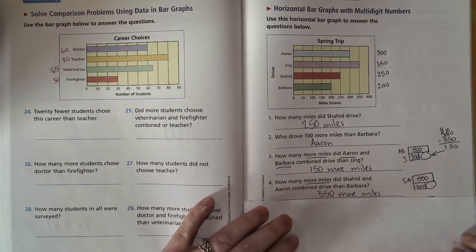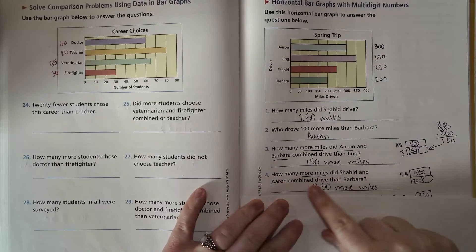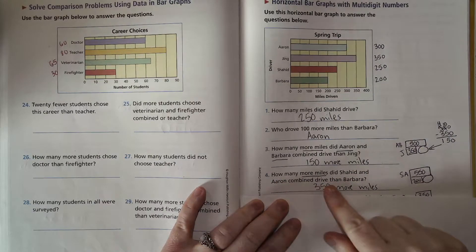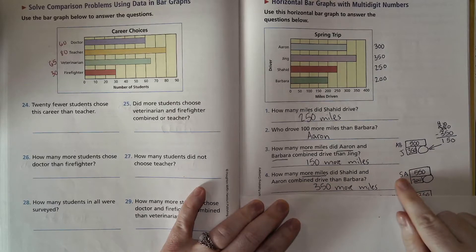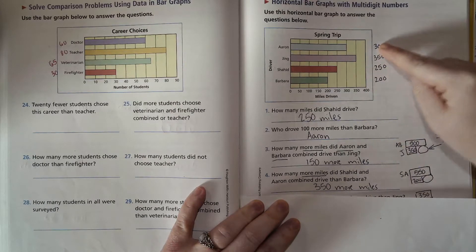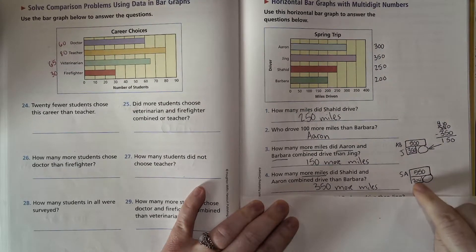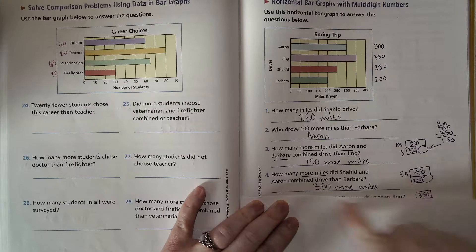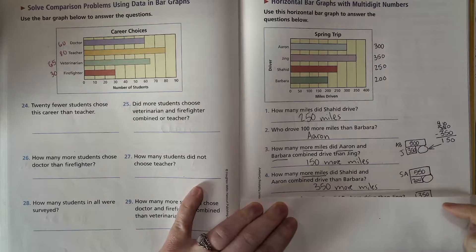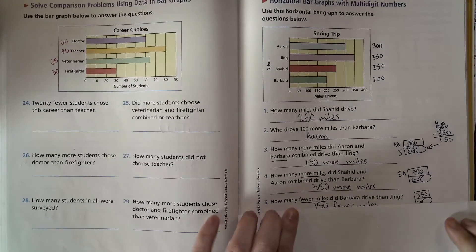Next one here: how many more miles did Shaheed and Aaron drive combined than Barbara? So then I have Shaheed and Aaron combined. Shaheed was 250, Aaron was 300, so that combined is 550. Barbara only had 200, so that goes there, and we found the difference, which is 350.